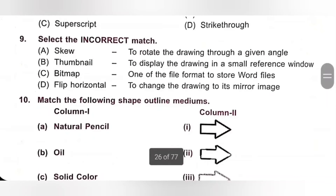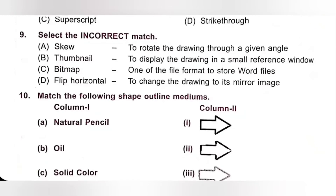Question 9: Select the incorrect match. A. Skew — to rotate the drawing through a given angle (correct match). B. Thumbnail — to display the drawing in a small reference window (correct match). C. Bitmap — one of the file formats to store a word file (incorrect — bitmap stores paint files, not word files). D. Flip Horizontal — to change the drawing to its mirror image (correct match). Option C is the correct answer.